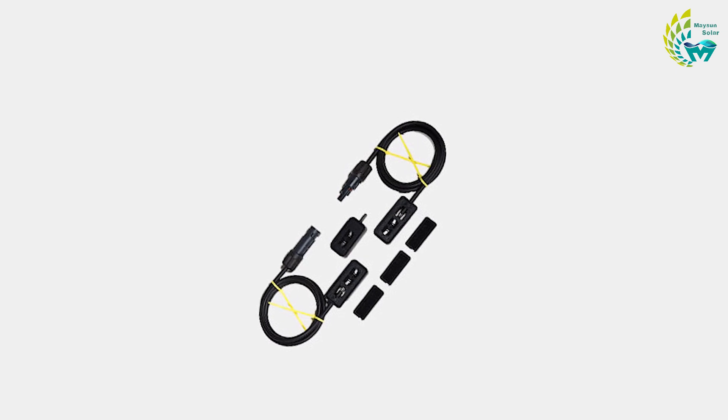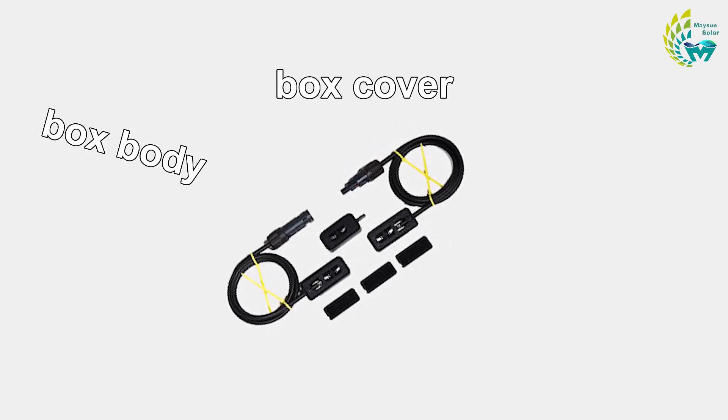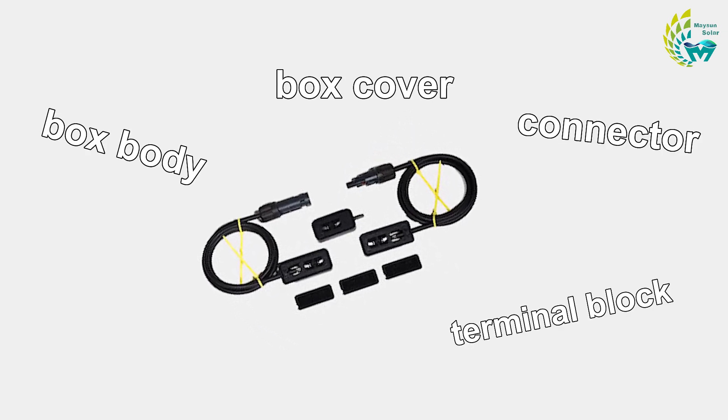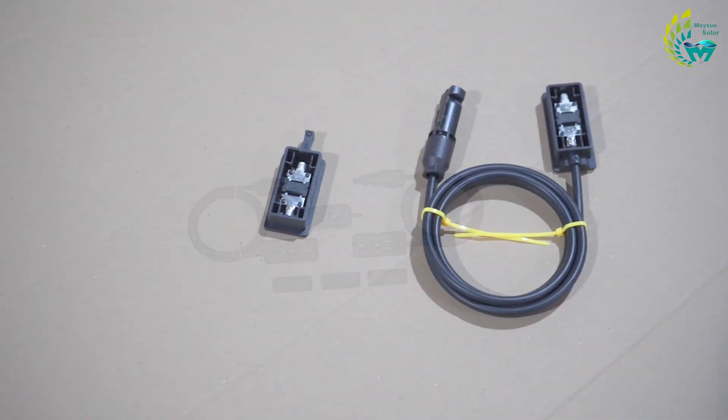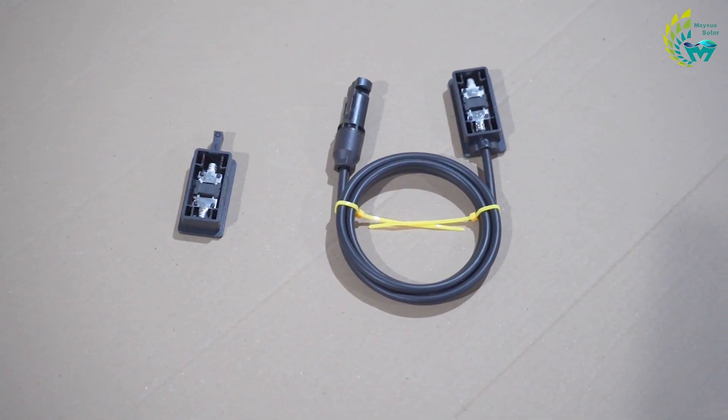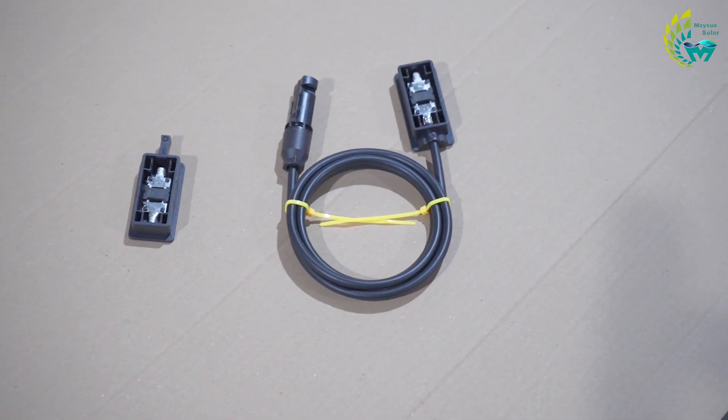The junction box is composed of box body, box cover, connector, terminal block, diode and so on. Among them, the box body is the main part of the junction box, built in terminals and diodes.